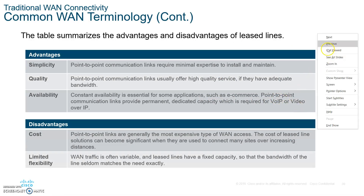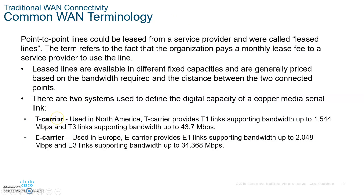When it comes to T-lines: T1 lines are used in North America at 1.544 megabits per second. T3 lines are 28 T1s, giving approximately 45 megabits per second. The European equivalent E1 provides 2.048 megabits per second, and E3 provides 34.36 megabits per second.